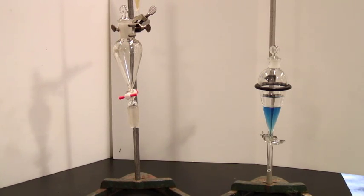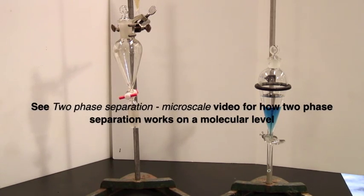The workup is a series of separation processes, and one of these can be a two-phase separation where you have two immiscible liquids and materials soluble to different extents in the two. The video on microscale separation goes into more detail about how two-phase separation works. This video talks only about the different techniques used on the macroscale.